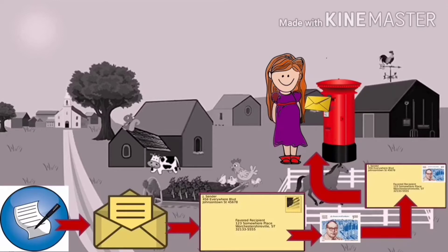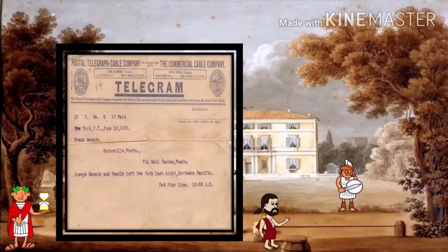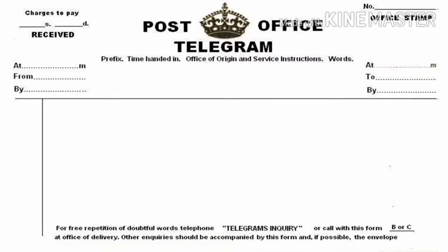Children, letters used to take a lot of time to reach. So when the post office started, urgent messages were sent by telegram. Messages in a telegram had to be short, and it was also expensive — because we had to pay money for every word written in the telegram. So more words meant more money.